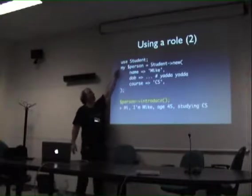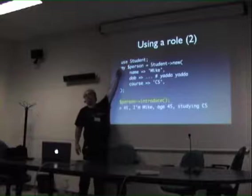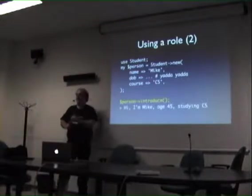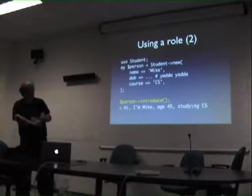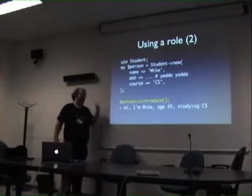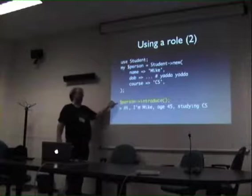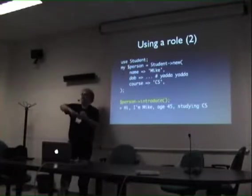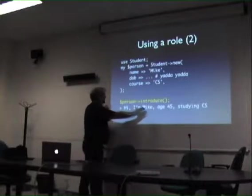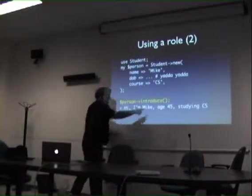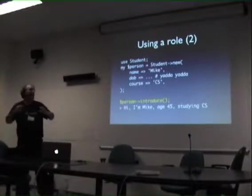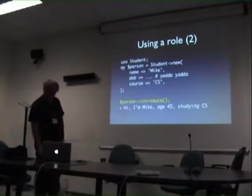We've gone one step further here, because we're actually creating an object for the class Student. Not only have we inherited from Person - from Person we've also picked up the Age role, so that Students have a `date_of_birth` attribute as well. Calling `introduce` on the Student, which we also have the `around` method on to wrap it with the 'hi' and the 'studying', gives us: that from the `around` method, that from the original Person object, that from the role, and the 'studying CS' from the `around` as well.